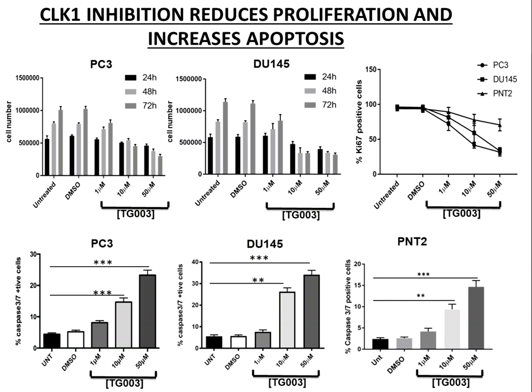We also see a concurrent increase in apoptosis — programmed cell death. Cancer cells can undergo deliberate programmed cell death called apoptosis, particularly where there is extensive DNA damage, and one of the hallmarks of cancer is to evade apoptosis. If we inhibit CLK1, we get a significant increase in apoptosis in two prostate cancer cell lines — PC3 and DU145 — and also in PNT2 normal prostate epithelium cells, suggesting CLK1 is involved in the regulation of both cell proliferation and apoptosis, presumably by phosphorylating key splice factors that regulate the splicing of genes involved in these processes.